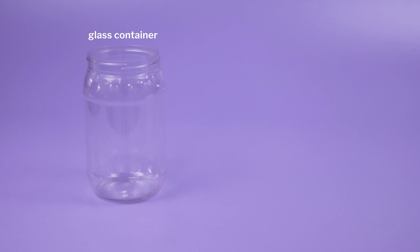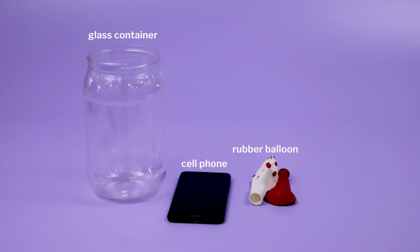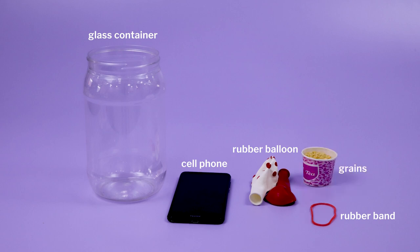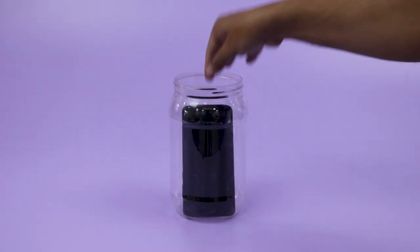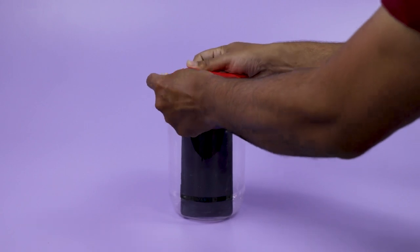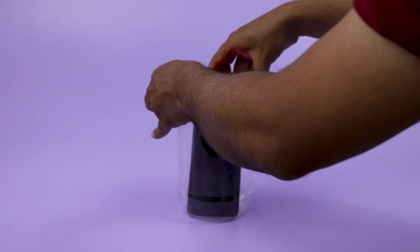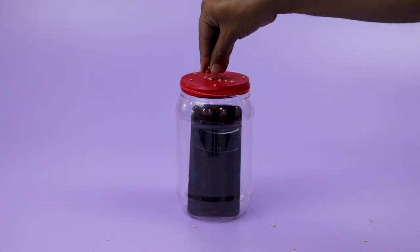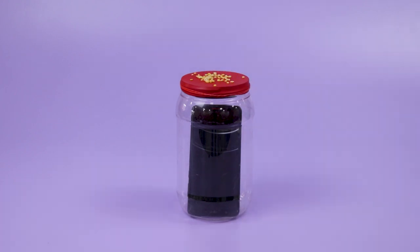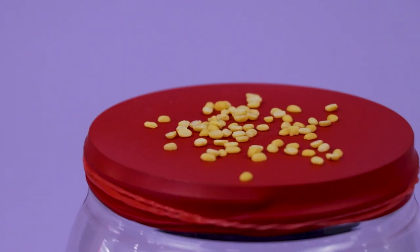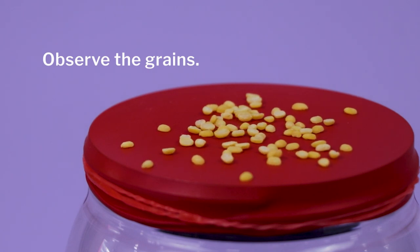For this activity, we need a glass or glass container, a cell phone, a rubber balloon, a few rubber bands or thread, and a handful of grain. Place the cell phone inside the glass container, stretch the rubber balloon across the mouth of the container, and secure the balloon with a rubber band or thread. Place some grains on the stretched balloon and then call the cell phone. Ask students to observe what is happening. Students could see the balloon membrane physically vibrate in response to the sound.